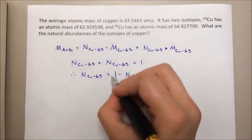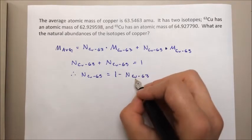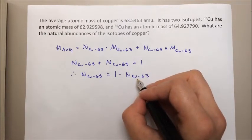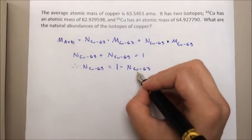So now we have the ability to express our whole equation with just the natural abundance of copper 63 as our unknown. Let's write that out.